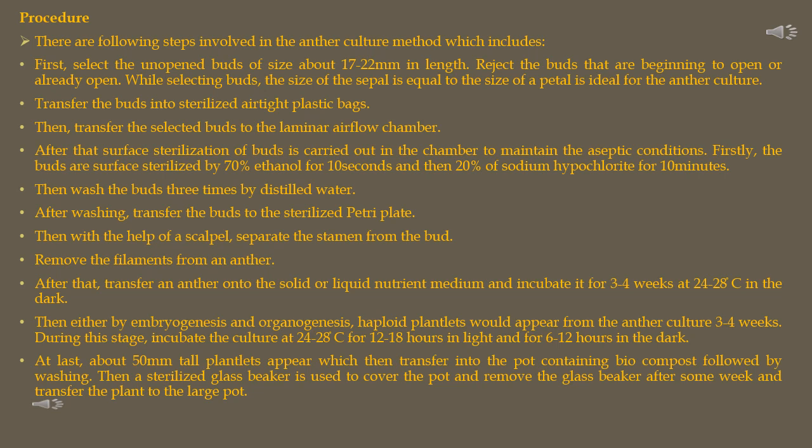After washing, transfer the buds to sterilized petri plates. Using a scalpel, separate the stamens from the bud and remove the filaments from the anther. Transfer the anthers onto a solid or liquid nutrient media and incubate for three to four weeks at 24 to 28 degrees Celsius in the dark. Either by embryogenesis or organogenesis, haploid plantlets will appear from the anther culture after three to four weeks.